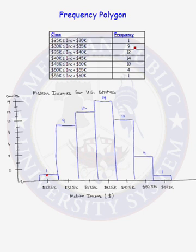Our second class had a frequency of 9, so above the midpoint of that class, we put a dot. Our third class had a frequency of 12, so over the midpoint, we put a dot at 12, a dot at 14, a dot at 10, a dot at 4, and a dot at 1. We want to get rid of the histogram bars because our frequency polygon does not contain those bars.